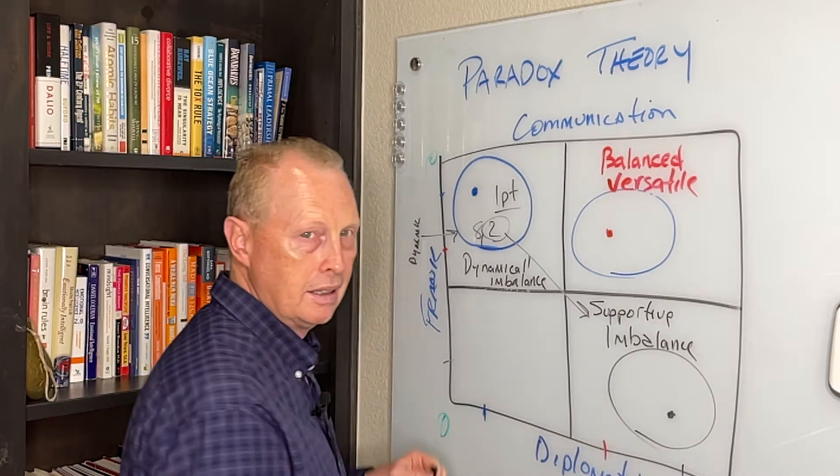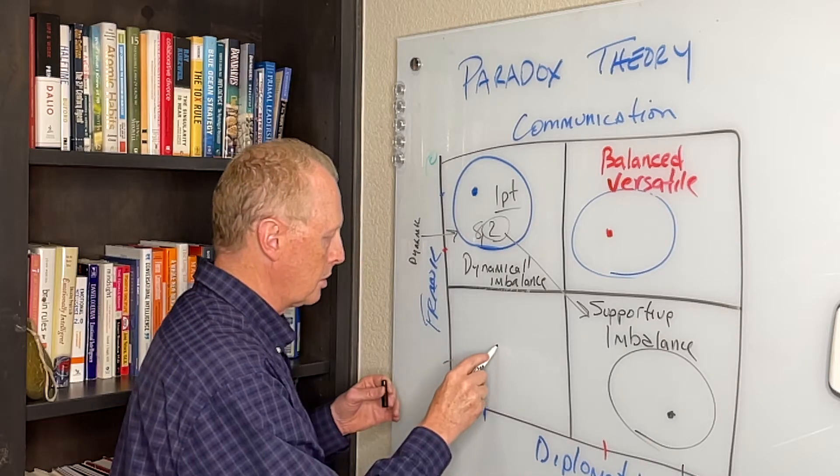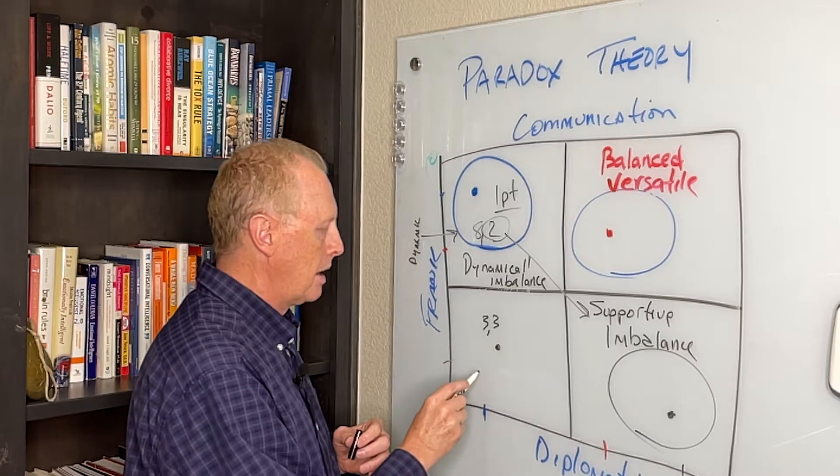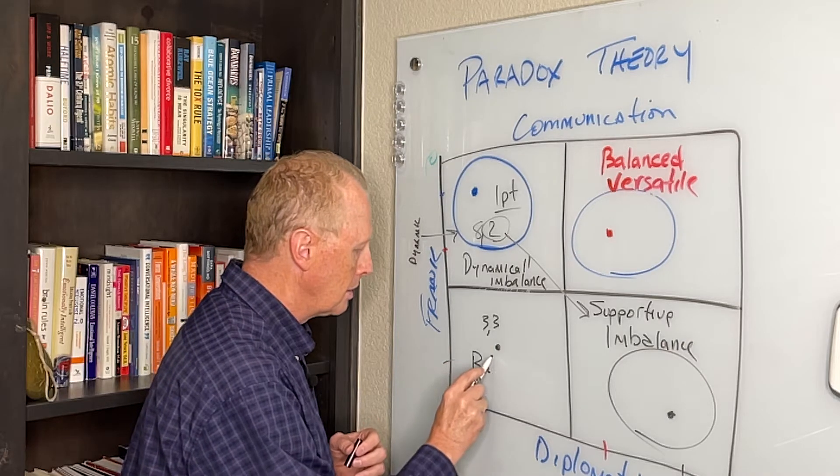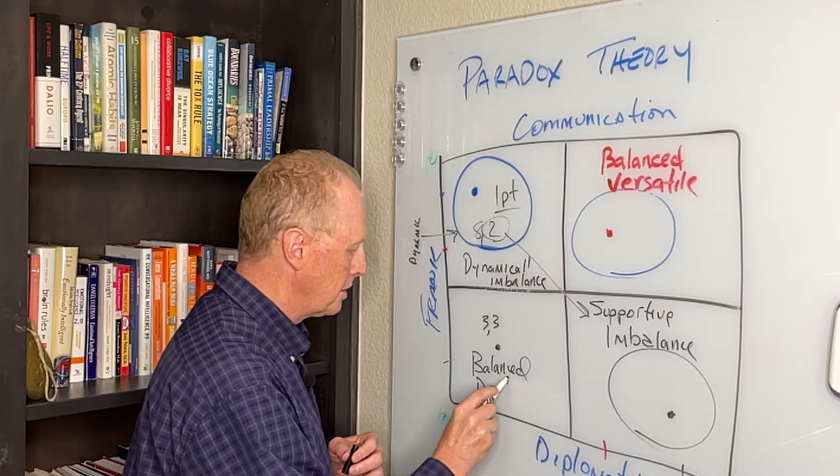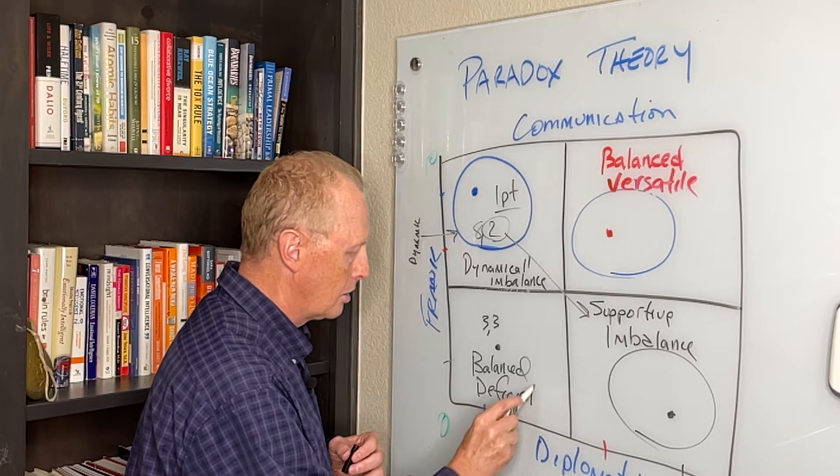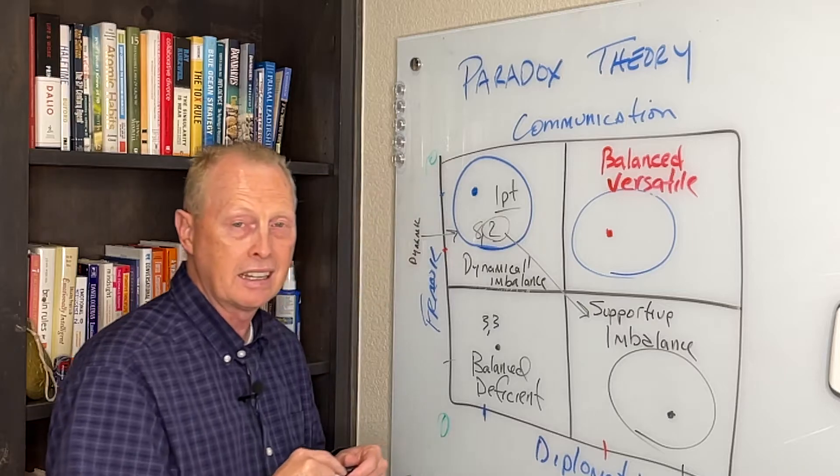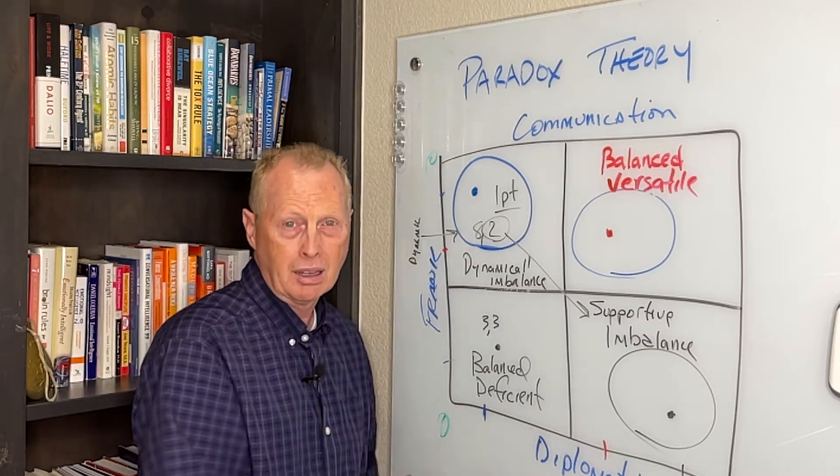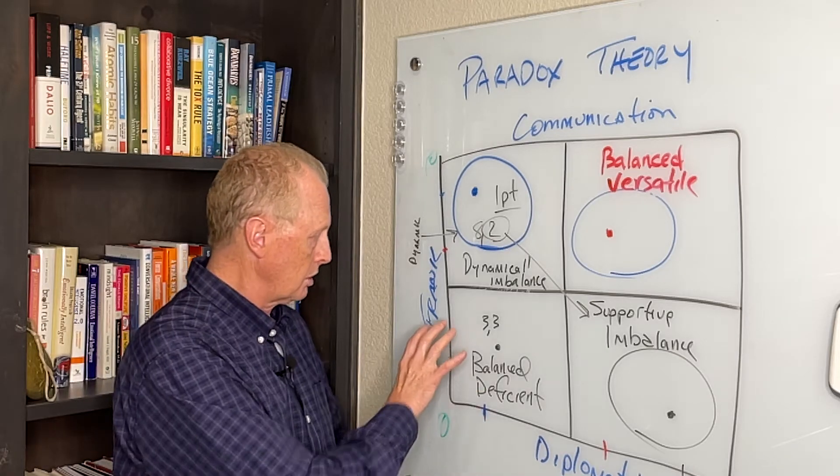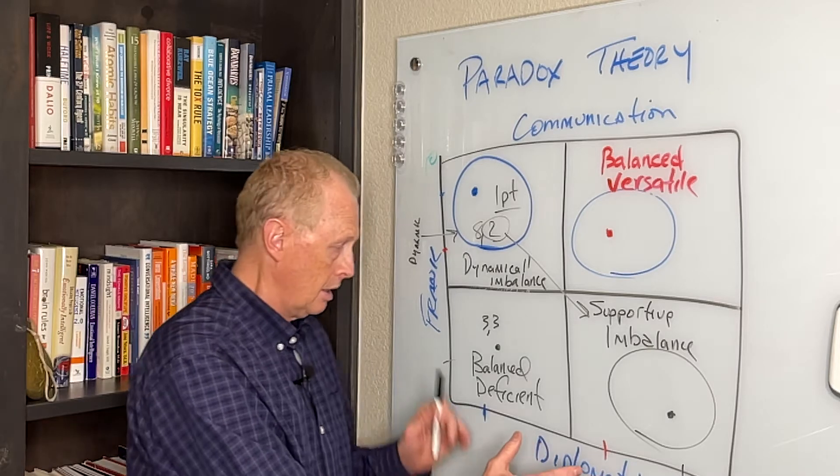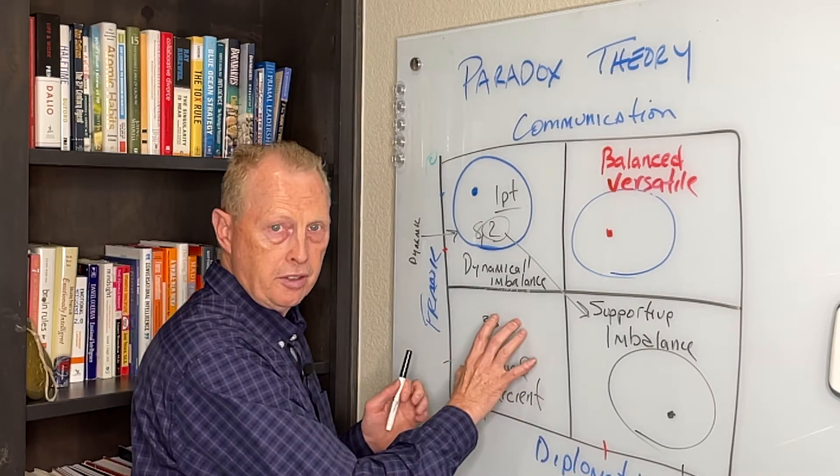Notice they're just both imbalanced. I only have one point. The last one is over here. What if I'm plotted right here? Let's say a 3-3. I'm going to be balanced, but I'm going to be deficient. I can't or I prefer or I tend not to do either. So I'm kind of non-communicative. I've had them where they just don't really want to be here, frank, and they really don't want to be here or diplomatic. So they're balanced, but they're deficient.